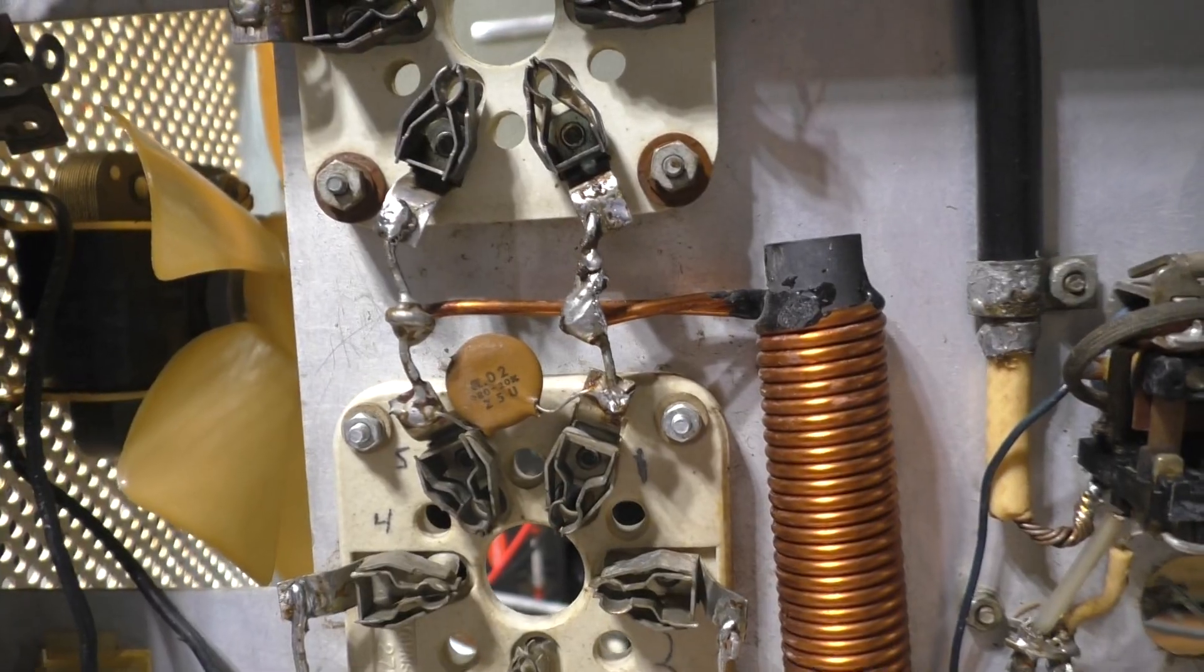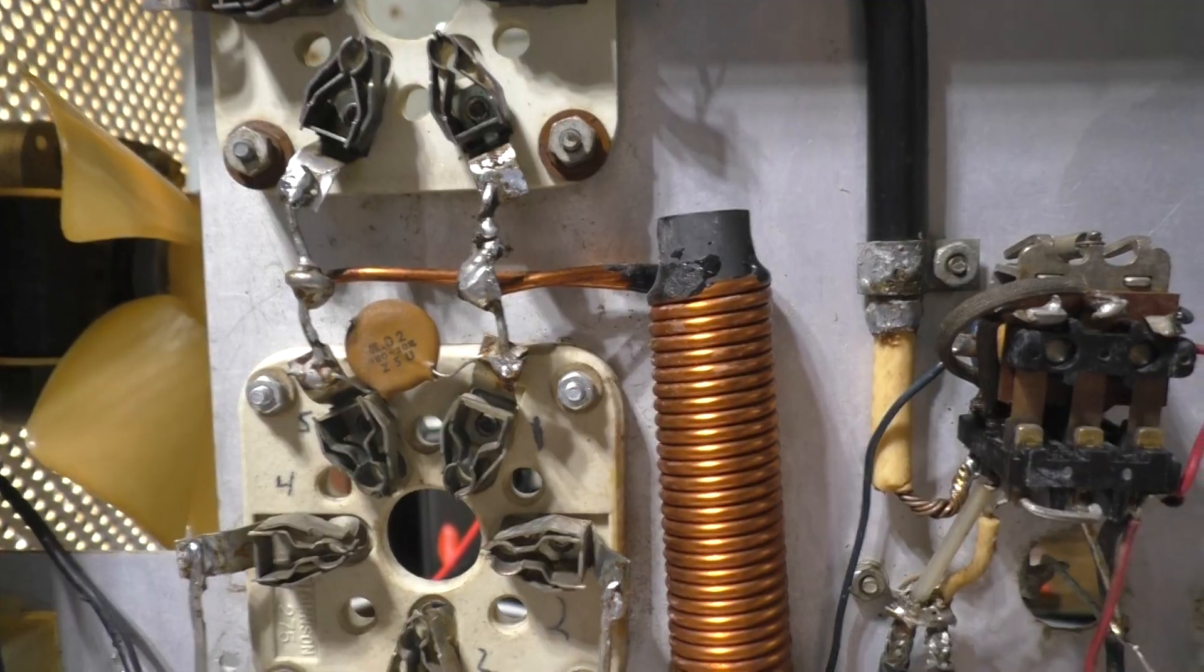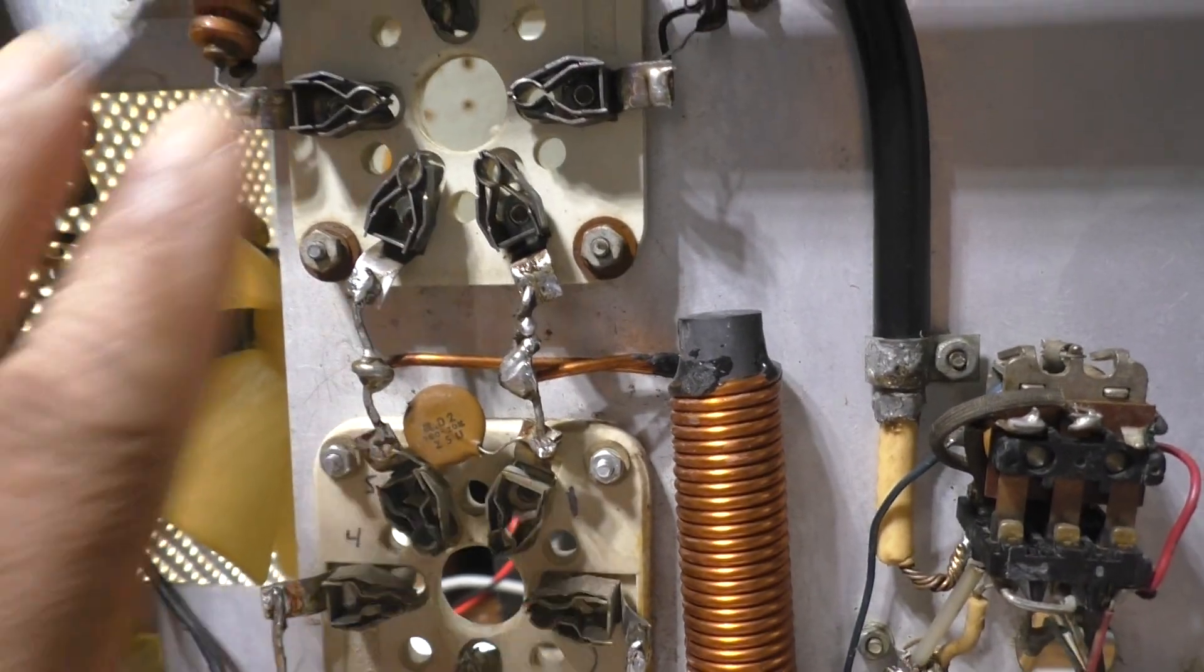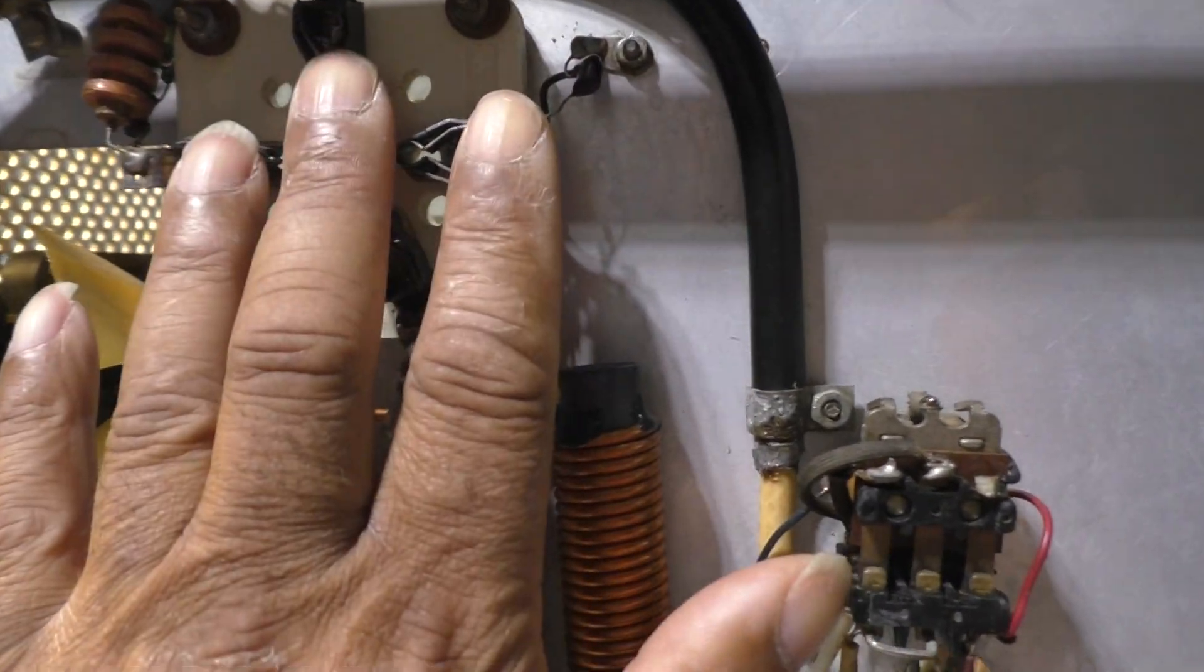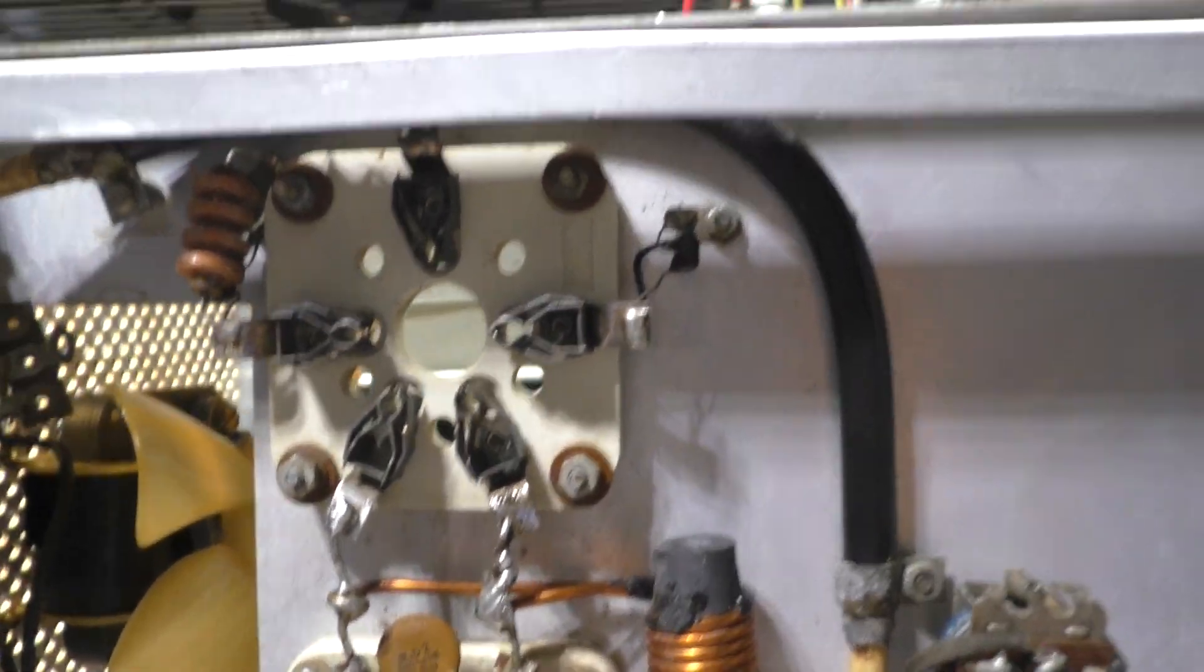The best is like the Drake L4B where they use forced air cooling. There's a blower underneath, it's sealed, and it blows the air up through the pins from the bottom, up through the top, and then out the plate. That's the best.